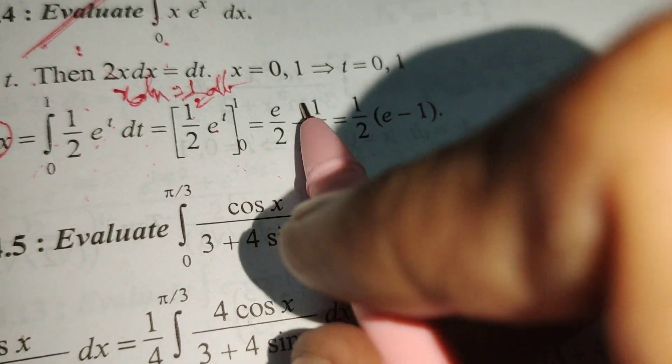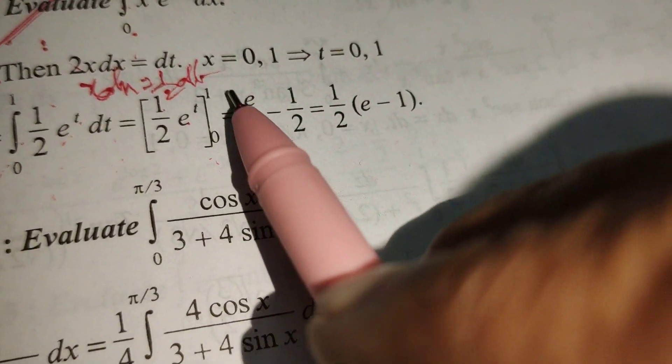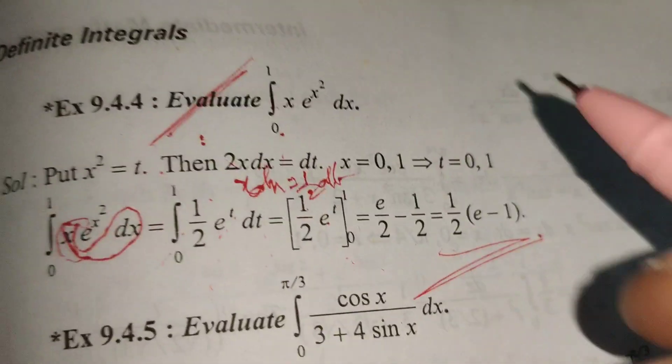Anything to the power 0 is 1, giving 1/2. In these two terms, 1/2 is the common factor. Therefore, ½(e - 1). This is the solution.